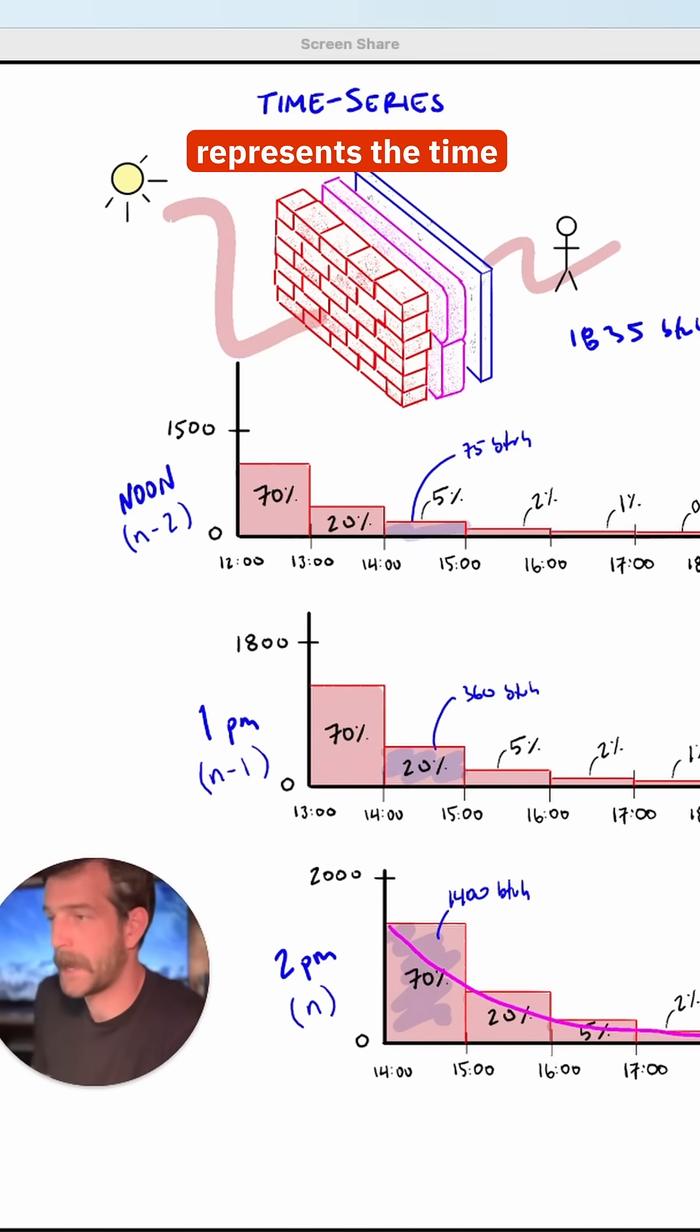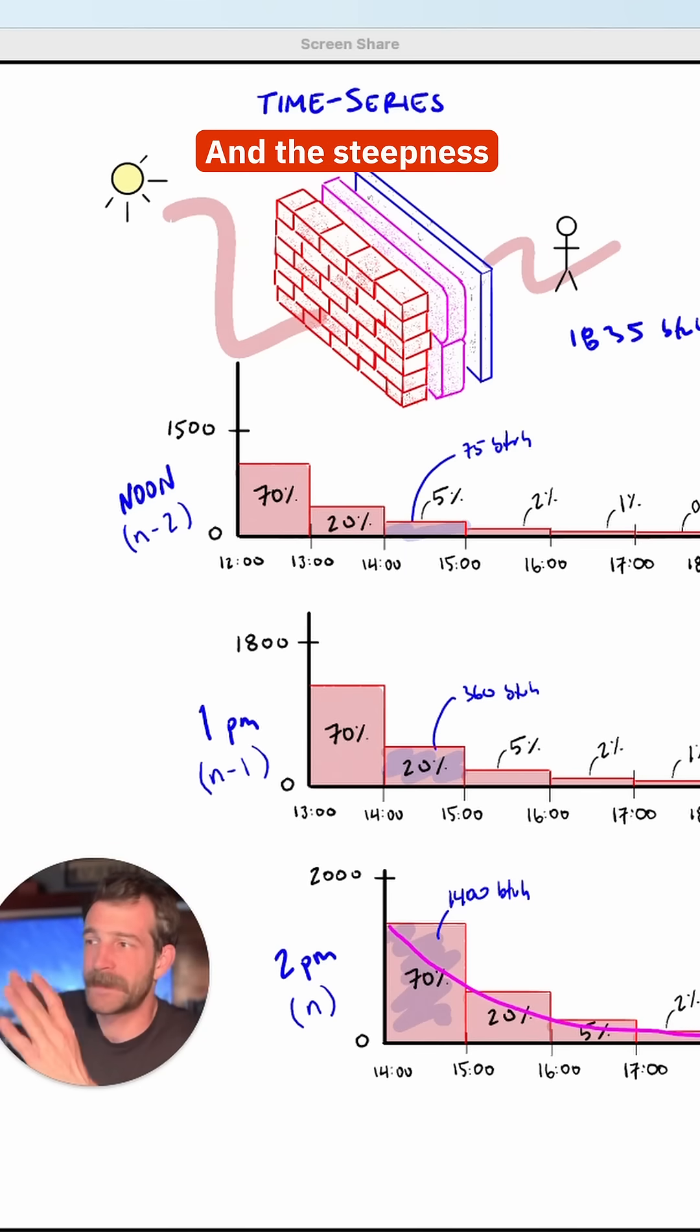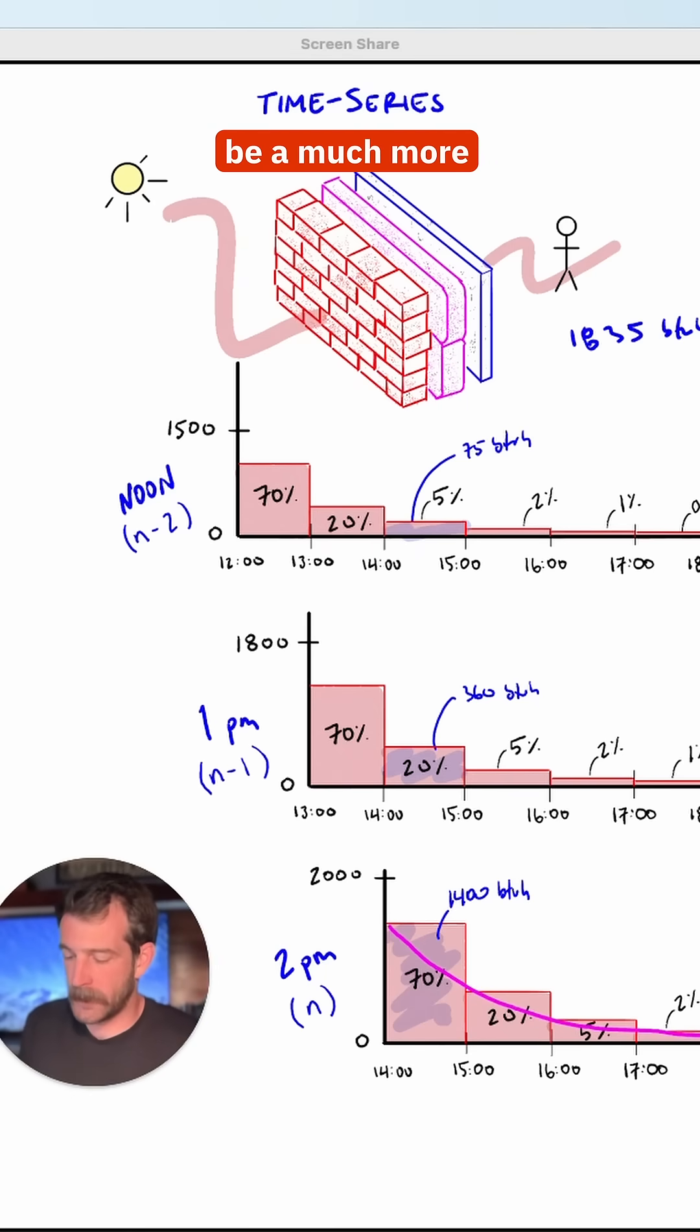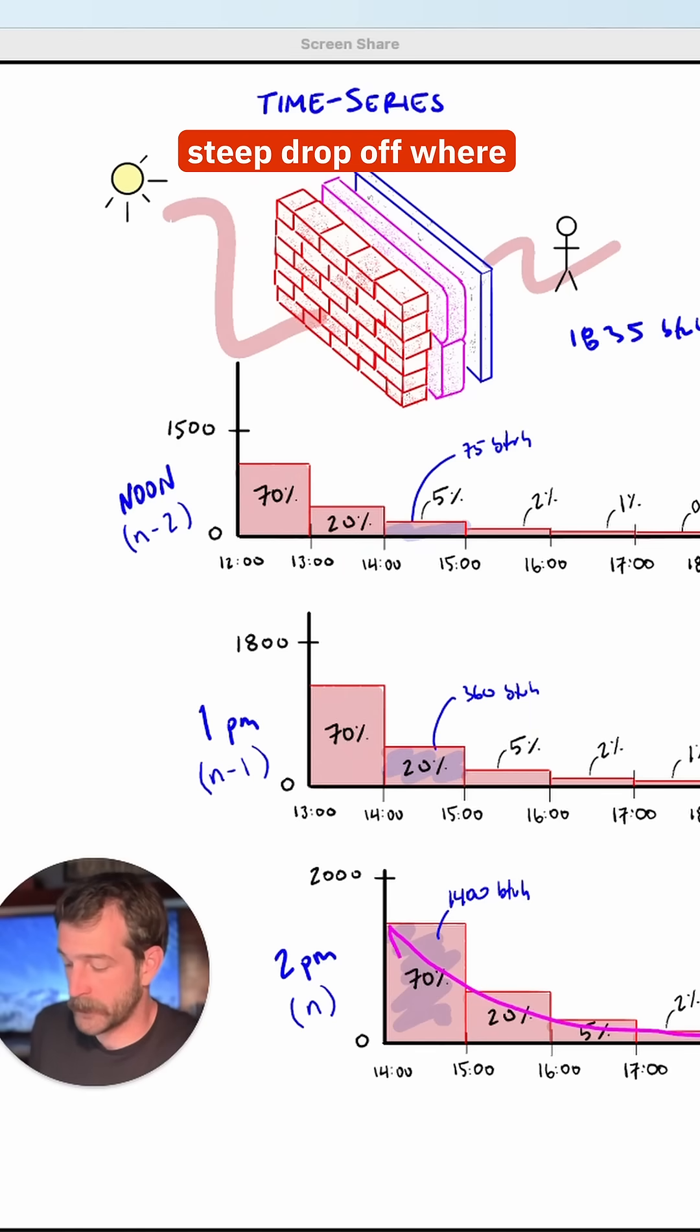This curve right here represents the time series for this assembly. And the steepness of the curve varies based on the thermal mass of the assembly. So for a high mass concrete wall, this is going to be a much more gradual curve like so. But for a window, this is going to be a very steep drop-off where most of your load will get through in the first hour and very little transfers later.